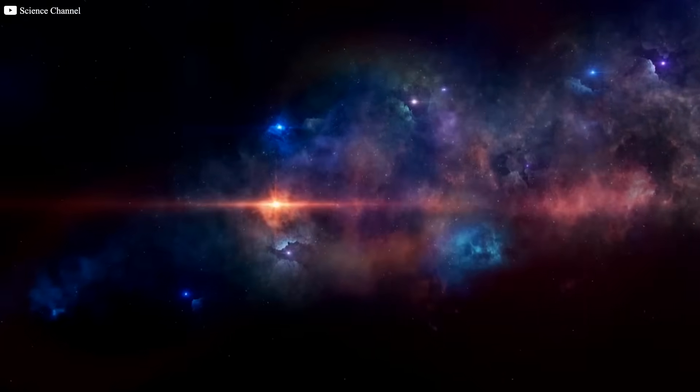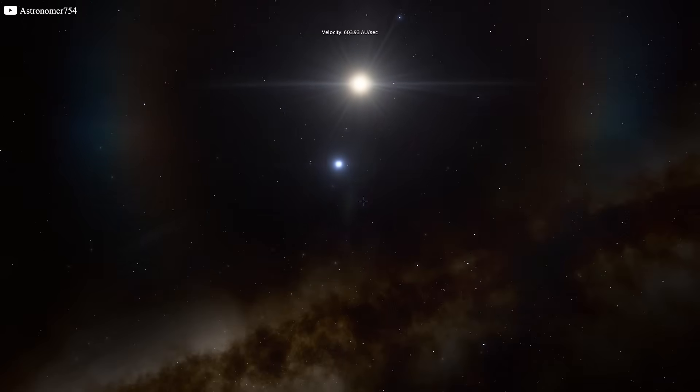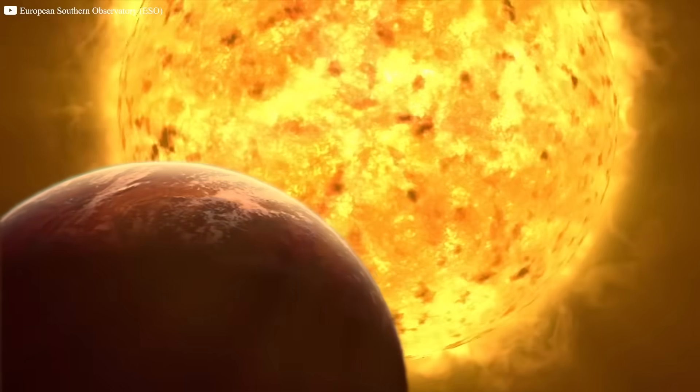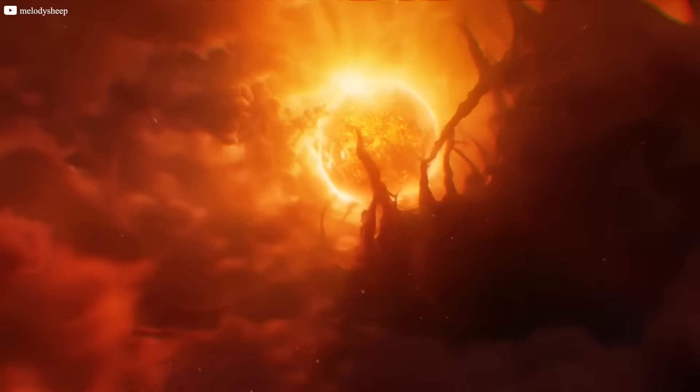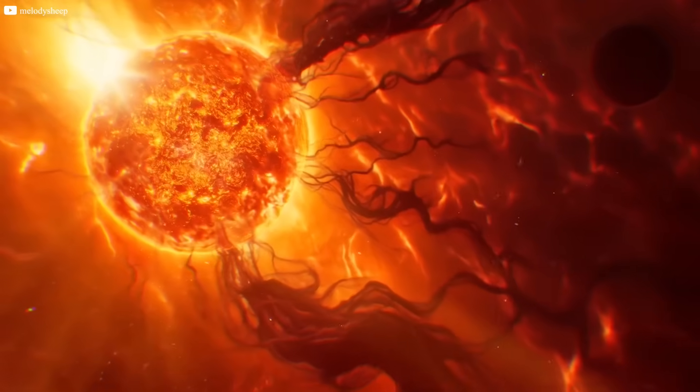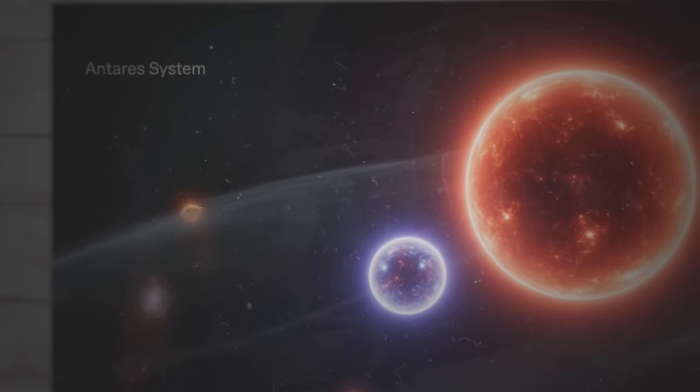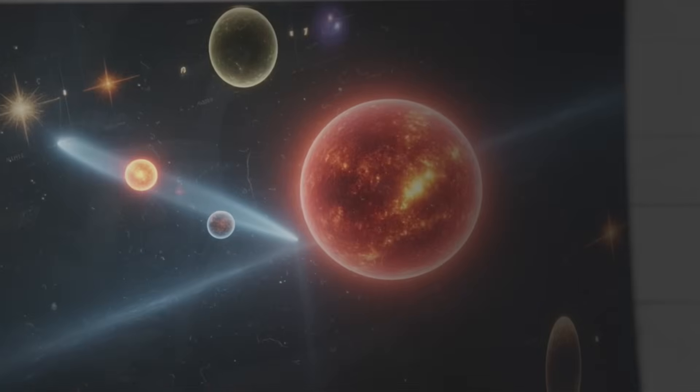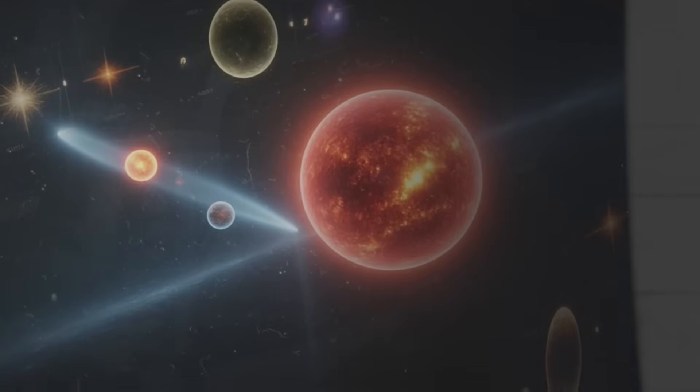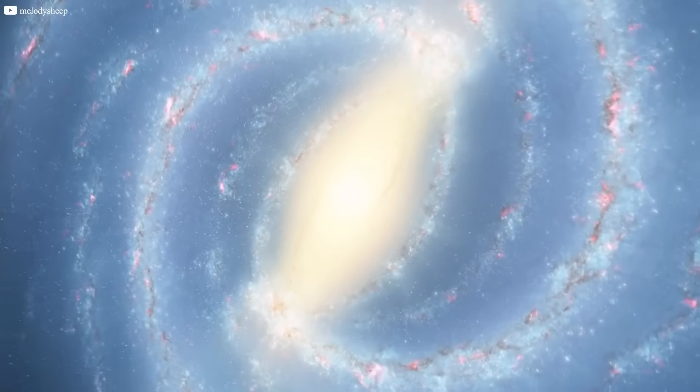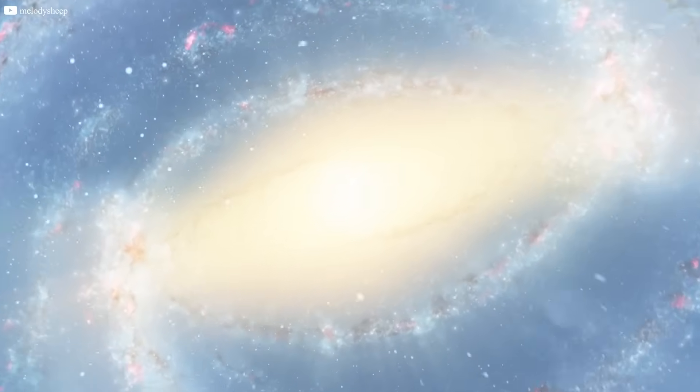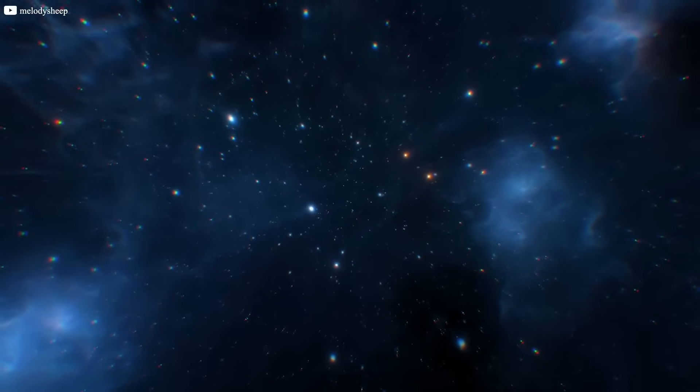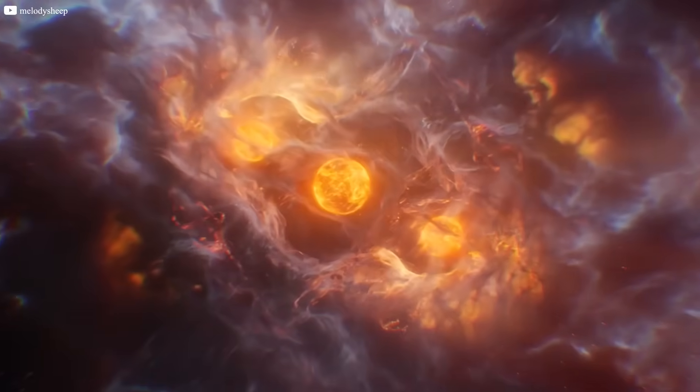This interaction can even affect the timing and intensity of the star's eventual death. For Antares, this dynamic relationship with its companion star plays a role in the star's final moments. As Antares exhausts its nuclear fuel, its massive size and unstable core will collapse, triggering a supernova. But it's the gravitational effects of Antares B that could modify the explosion, potentially altering its brightness or even the type of remnant left behind, such as a neutron star or black hole. The study of binary systems like that of Antares and Antares B provides valuable insights into how stars evolve and die. It's a key piece of the puzzle for astronomers, offering a deeper understanding of how the most massive stars end their lives. The unfolding of this cosmic drama will teach us more about the intricate dance of celestial bodies and the forces that govern them.